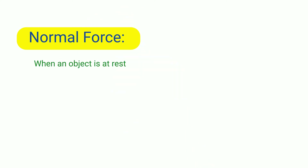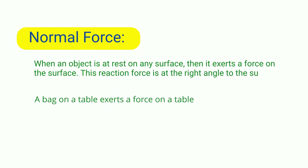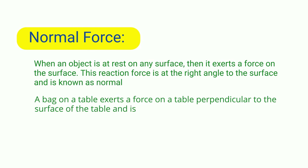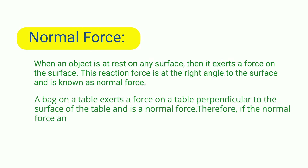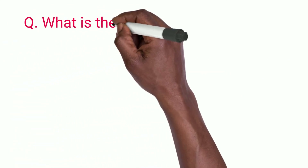Normal force — when an object is at rest on any surface, it exerts a force on the surface; this reaction force, at right angles to the surface, is called normal force. For example, a bag on a table exerts a force perpendicular to the surface of the table. If the normal force and gravitational force are balanced, the bag will rest on the table.